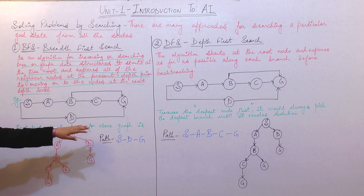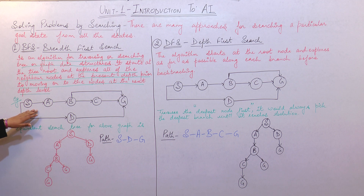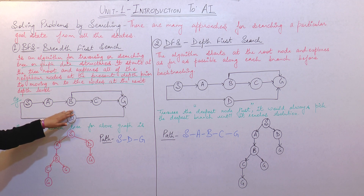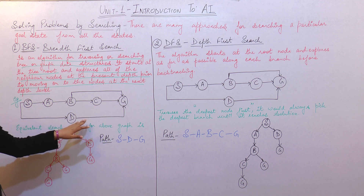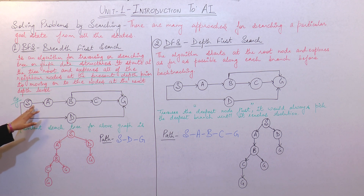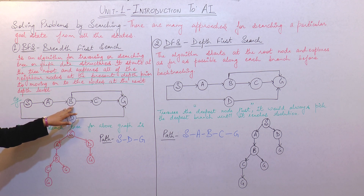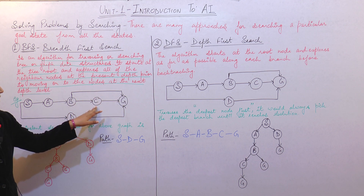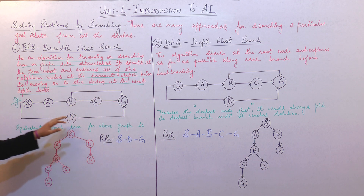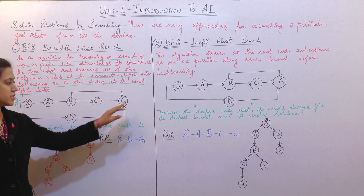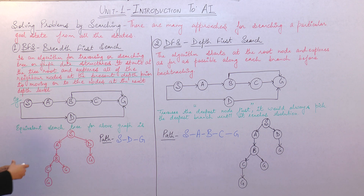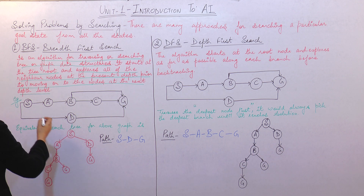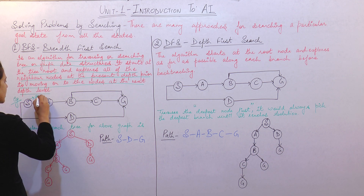We are given a graph with nodes S, A, B, C, G, and D. S is connected to A, A is connected to B, B is connected to G and C, and C is connected to G. Similarly, S is also connected to D and D is connected to G. So according to this graph, suppose that S is our starting node.